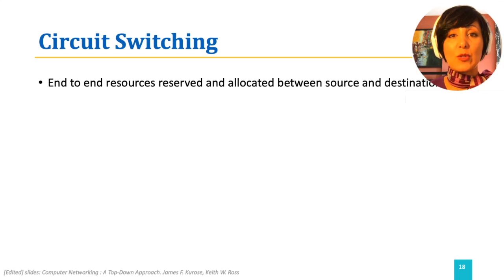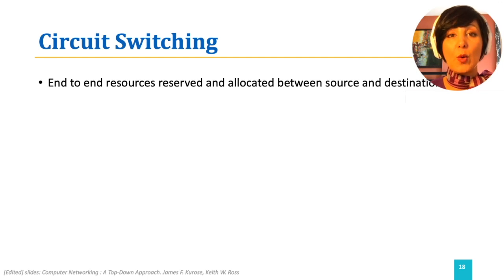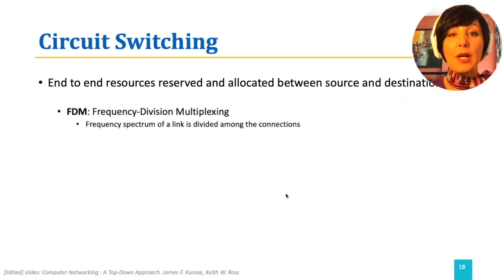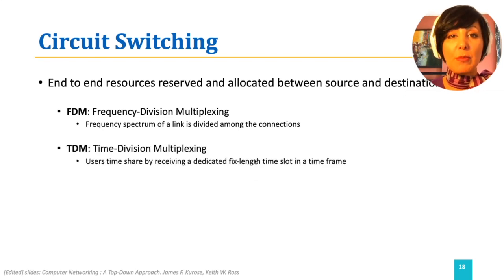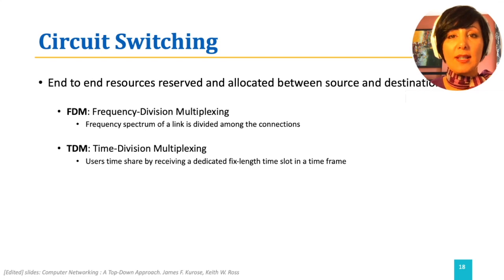Circuit-switching in a link is implemented using frequency-division-multiplexing (FDM) or time-division-multiplexing (TDM). In FDM, the frequency spectrum of a link is divided among the connections established across that link. In TDM, users timeshare by receiving a dedicated fixed-length time slot in a time frame.